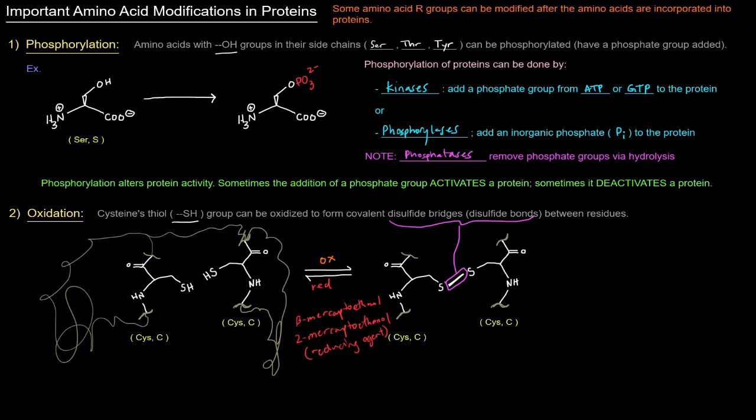So phosphorylation and oxidation are the first two amino acid modifications that can occur in proteins.